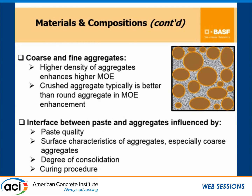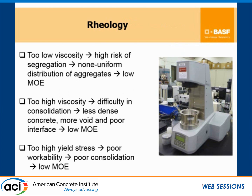Regarding coarse and fine aggregate, higher density of aggregate enhances higher MOE. Crushed aggregate is typically better than rounded aggregate for MOE enhancement. Regarding the interface between paste and aggregate, it is influenced by paste quality, the surface characteristics of aggregate especially coarse aggregate, and the degree of consolidation. Curing procedure is also very important — if you don't have the right curing procedure, it can negatively influence the microstructure, especially the interface between aggregate and cement.